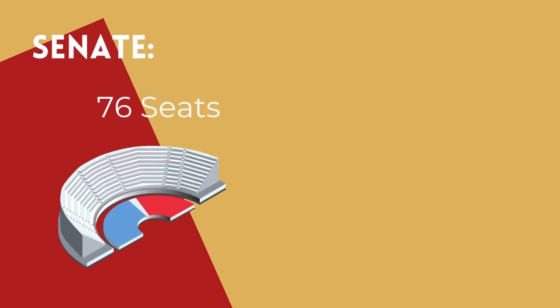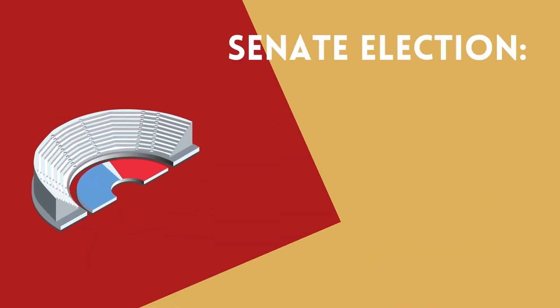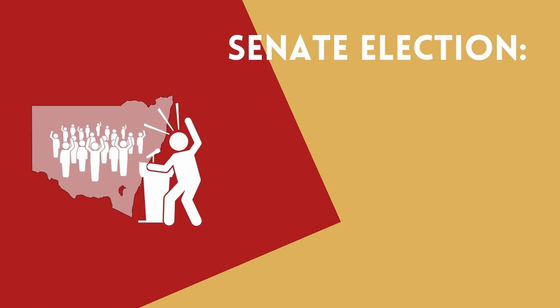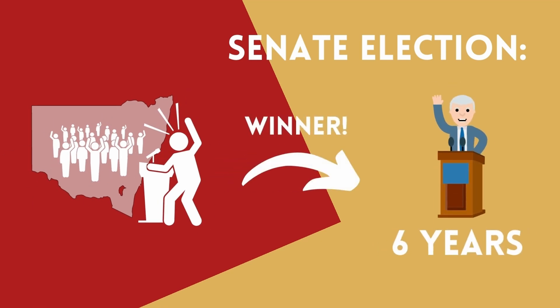The Senate has 76 seats, 12 seats representing each state, and two representing each territory. Half of the Senators go up for re-election on a staggered basis each federal election, because they sit in Parliament for a term that is twice as long as that of the lower House members. As a result, there are six Senate seats per state up for grabs in a typical election.